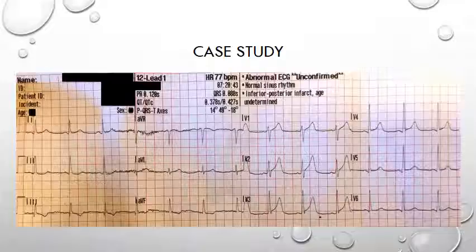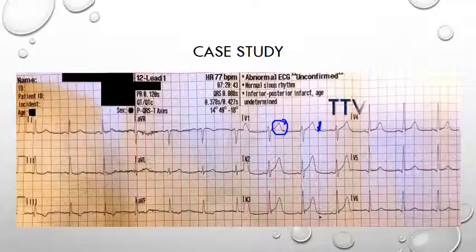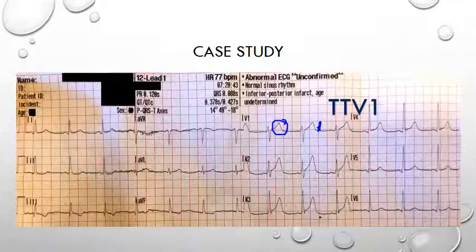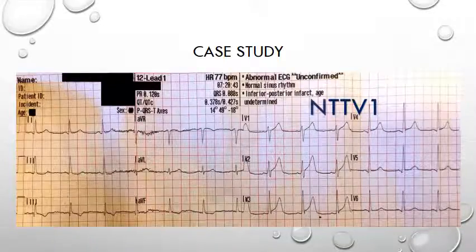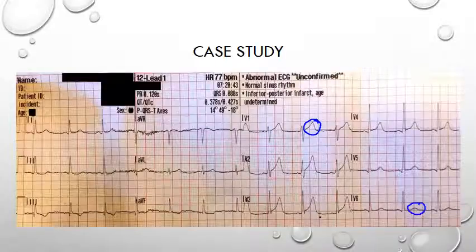An upright T wave in lead V1 is considered abnormal, particularly if it is a tall T wave — referred to as TTV1 (tall T in V1). This indicates a high likelihood of coronary artery disease, and if the T wave is a new finding (NTTV1 — new tall T in V1), this is especially concerning and implies acute ischaemia. Your index of suspicion should be even higher if the T wave in V1 is taller than the one in V6 — Marriott described this as a loss of T wave precordial balance.